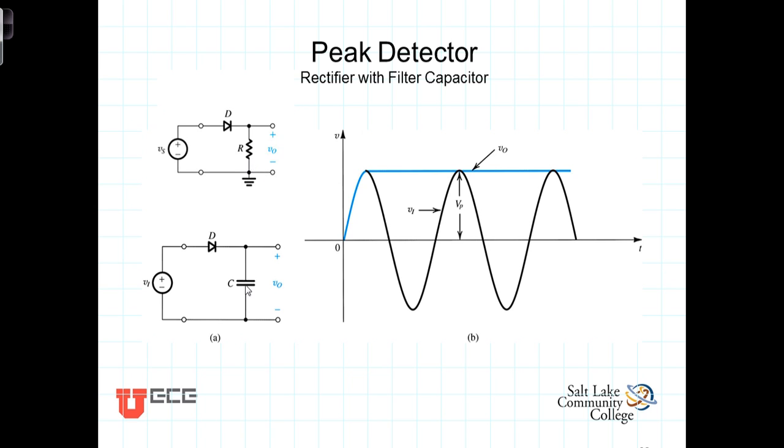Now in this circuit, we're going to replace the resistor with a capacitor. The diode only allows current to flow in one direction, so the capacitor charges up to whatever the peak value of the source is.